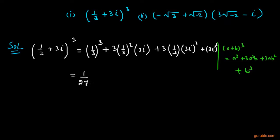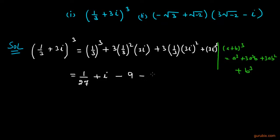If we solve these terms: the first gives 1 over 27; the second becomes plus iota; the third becomes minus 9, because 3 cancels with 3, giving 9, and iota squared equals minus 1, so 9 times minus 1 equals minus 9.